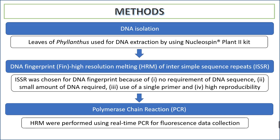Moving to the methods: DNA isolation was performed from Phyllanthus leaves using a Nucleospin Plant Kit. We then selected the DNA marker — the ISSR marker, which stands for inter-simple sequence repeat — chosen for DNA fingerprinting due to its advantages: no requirement of prior DNA sequence knowledge, small amount of DNA required, use of a single primer, and high reproducibility.